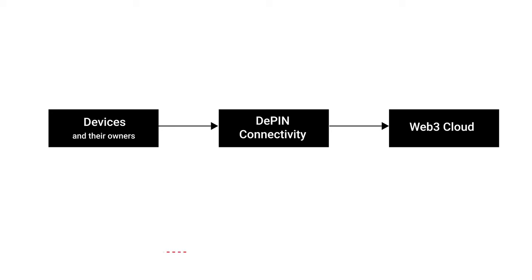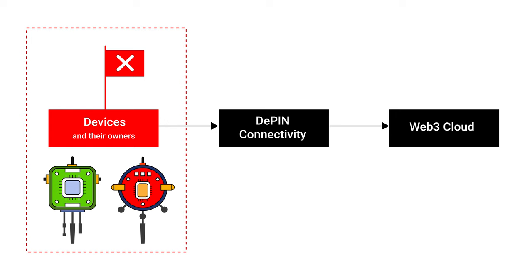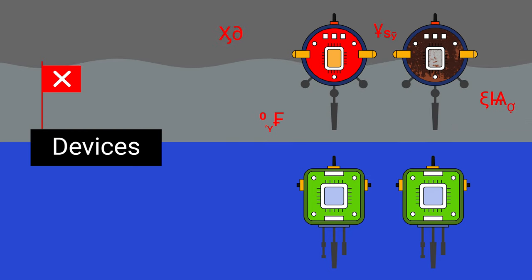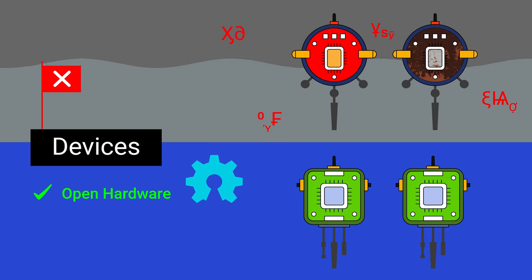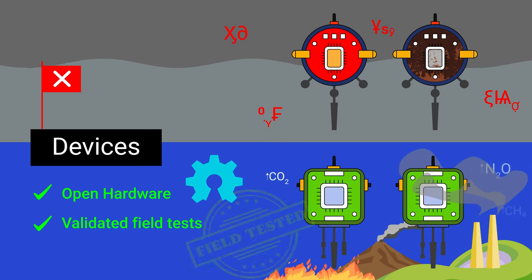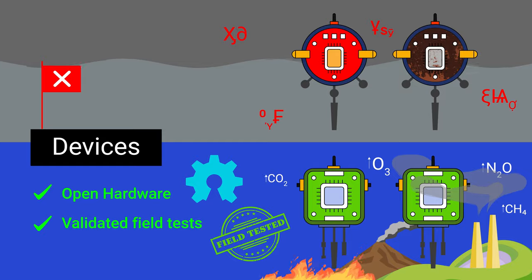Untrusted Devices. First, the quality of the infrastructure devices themselves is very important. The value of resources and data from untested devices, or devices not designed for their tasks, will be low. So it's important to use devices designed for specific purposes, with an open component base, and that have undergone field testing.